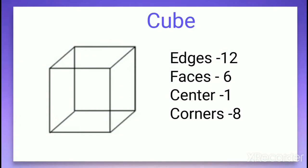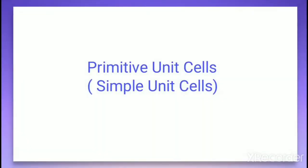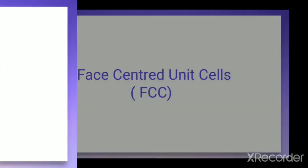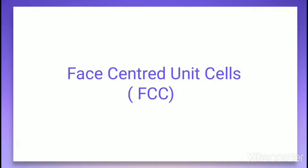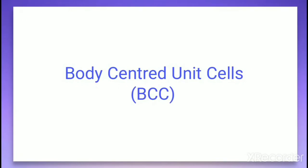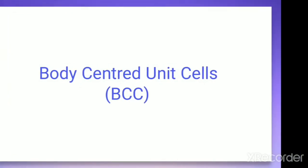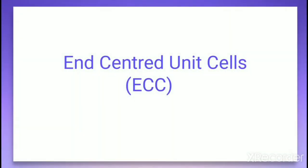We are considering a cubic unit cell. In a cube there are 12 edges, six faces, one center, and eight corners. Let us discuss the primitive unit cell, also called simple cubic unit cell; the face-centered unit cell, also called FCC (face-centered cubic); the body-centered unit cell, BCC; and the end-centered unit cell, ECC. Let us discuss all these cells through a visual.